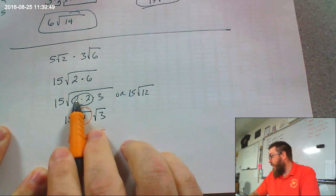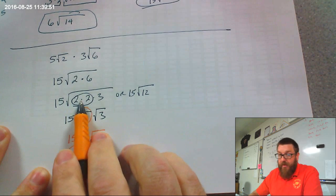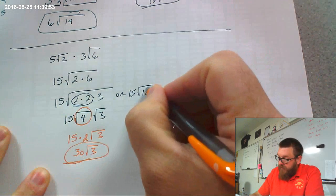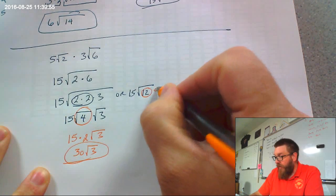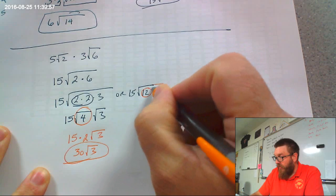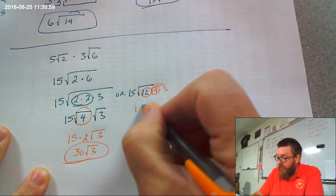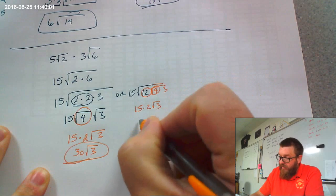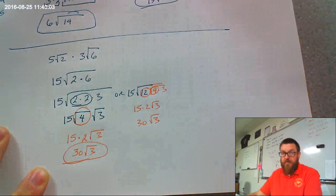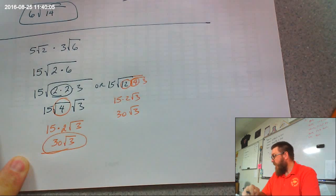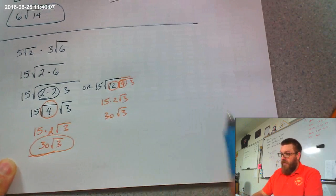Now, let's say I did not recognize that right there like this. Hopefully, I would see that that's 4 times 3. And the square root of 4 is 2, so I get 15 times 2 times the square root of 3. Same thing. Either way, same way. Same end result.